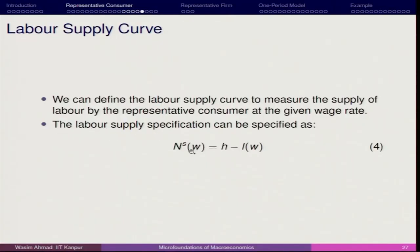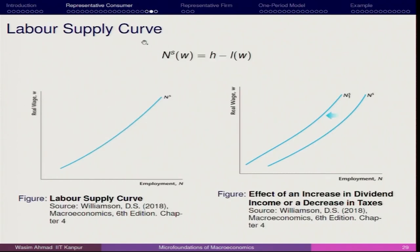When you have interaction between the consumer and the firm, you have to bring the labor supply idea into account. Labor supply NS is the real wage rate times the number of hours available minus the leisure component, which is also linked to the wage rate. The labor supply curve will have an upward slope because as the real wage increases, employment will increase, but after a certain point it will have a backward bending scenario.